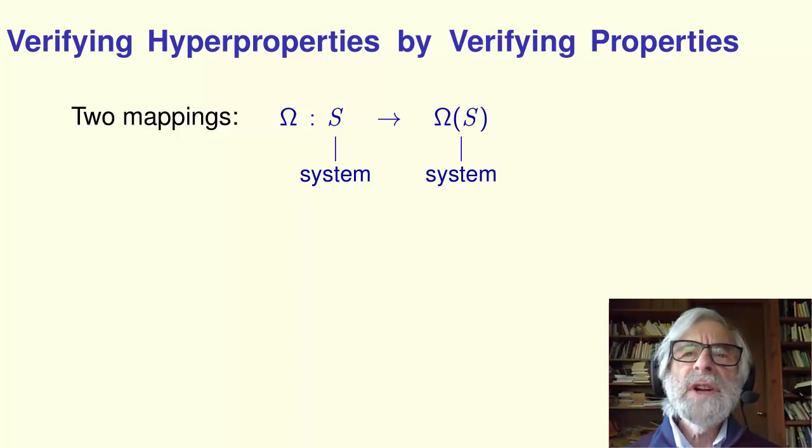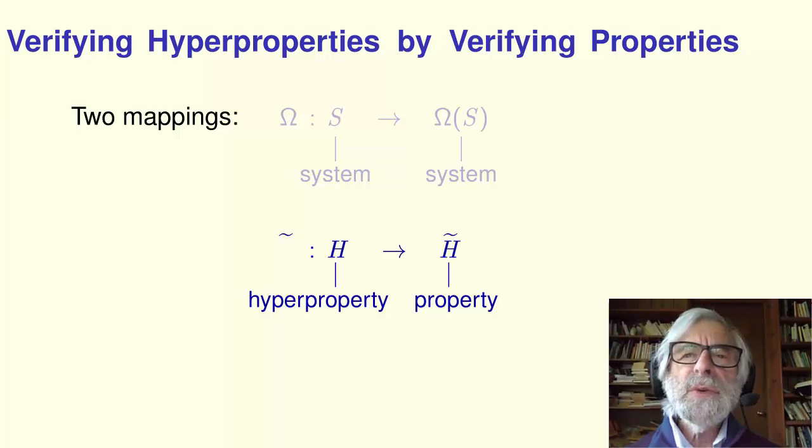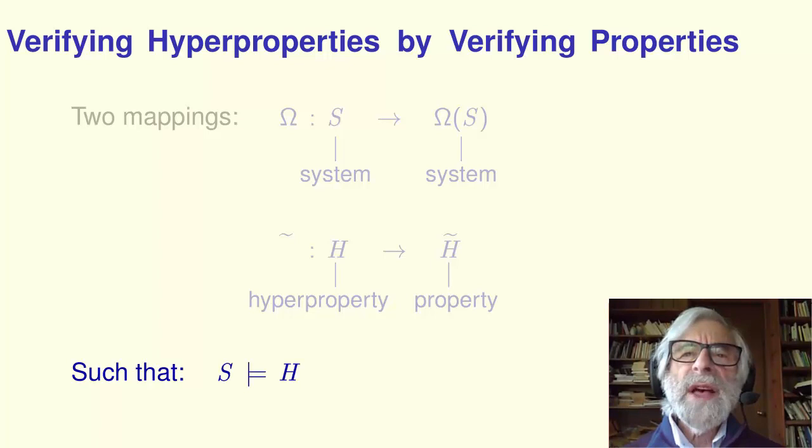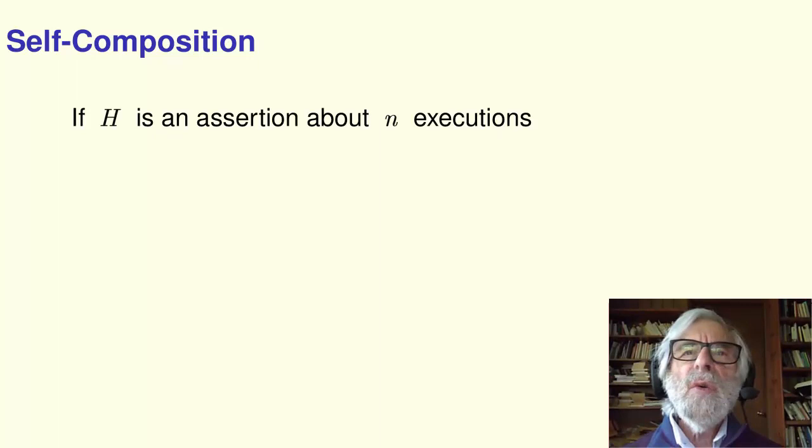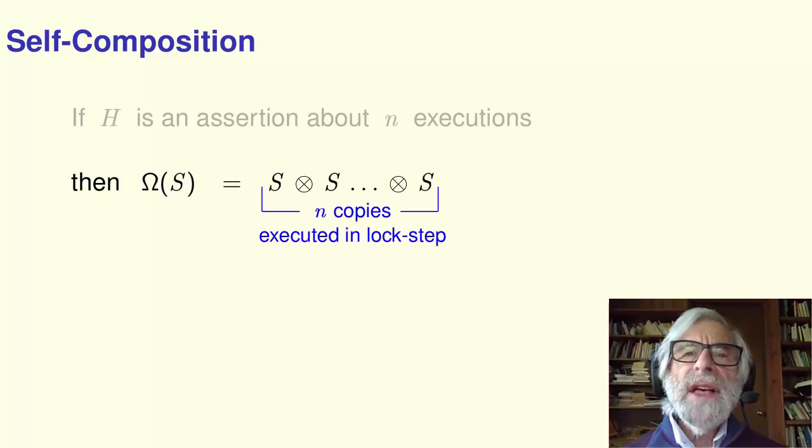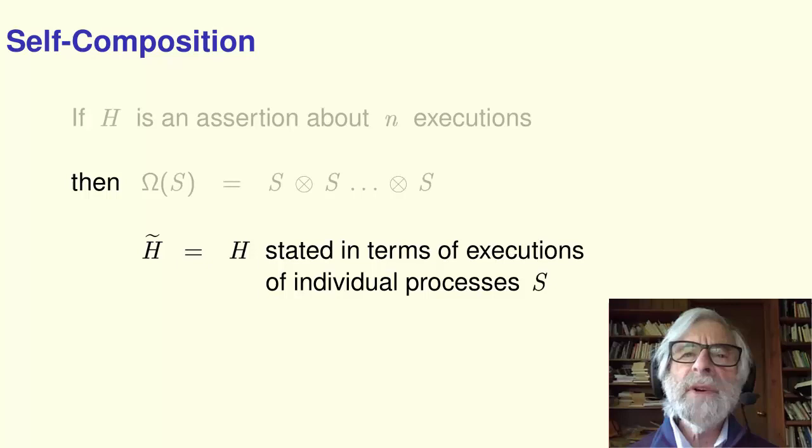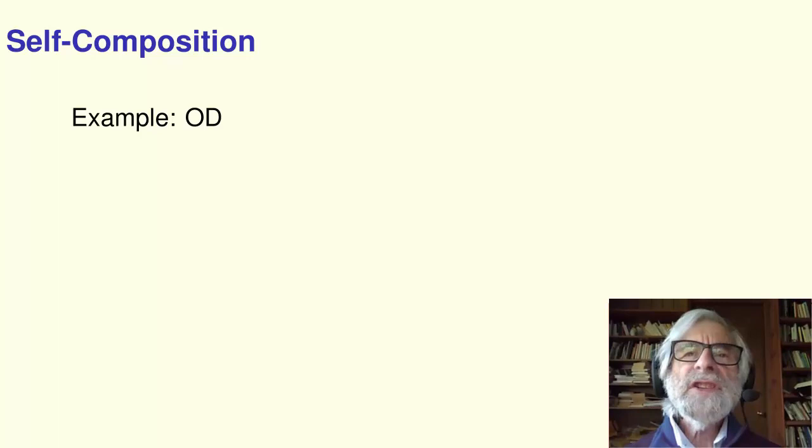The first maps a system S to another system, omega of S. The second maps a hyperproperty H to an ordinary property H tilde. These mappings are defined so that system S satisfies hyperproperty H if and only if the system omega of S satisfies the ordinary property H tilde.